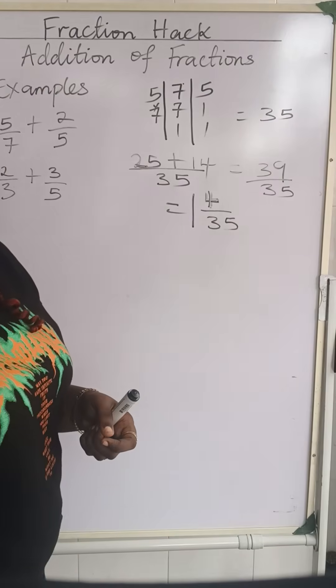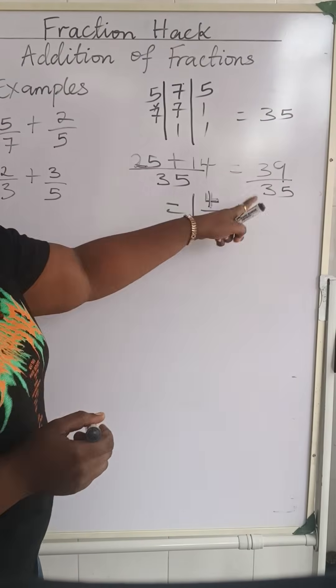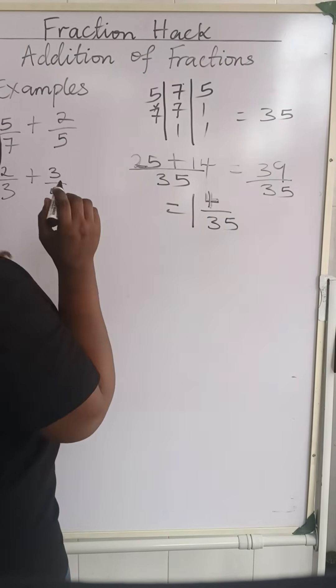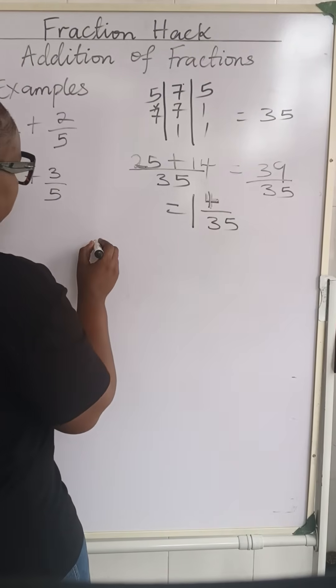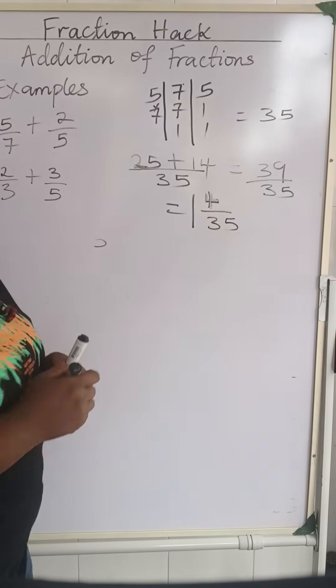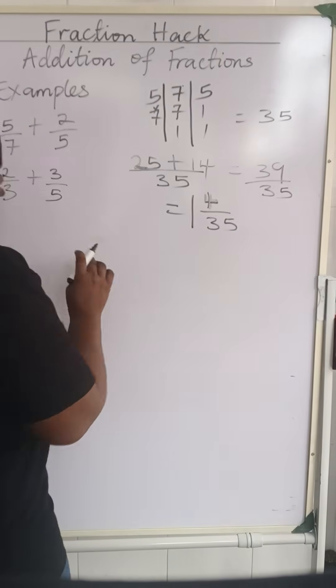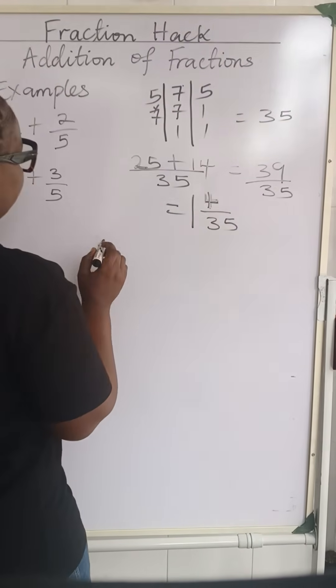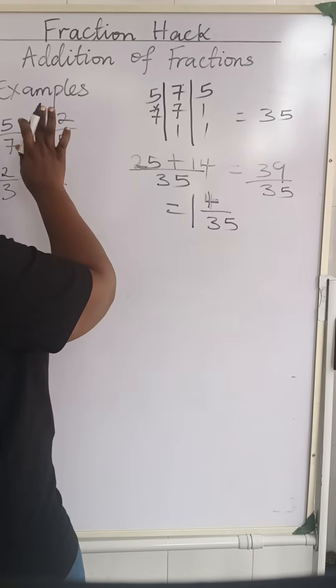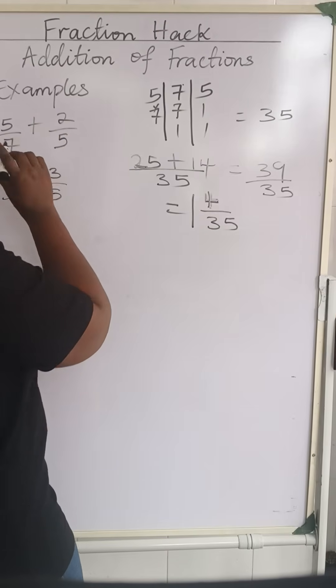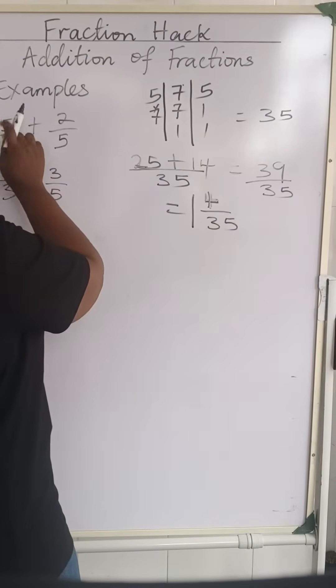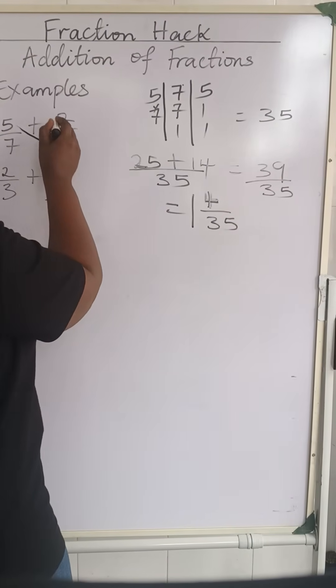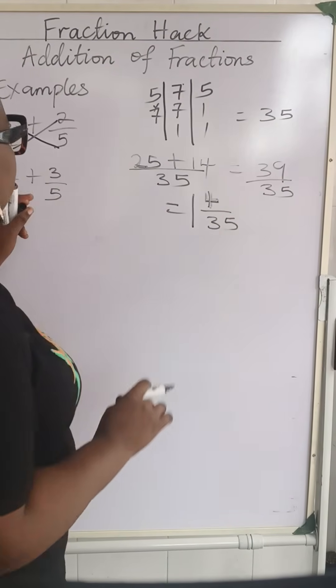Now let's look at the hack for this thing we have solved. The hack is going to use the butterfly style. How do I mean? You do it this way. This will multiply this and this one, or you do cross multiplication however you call it.